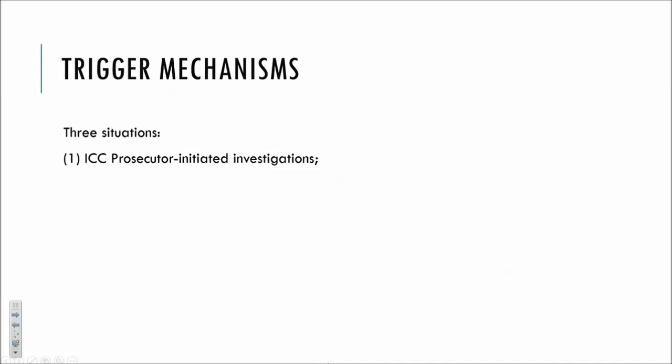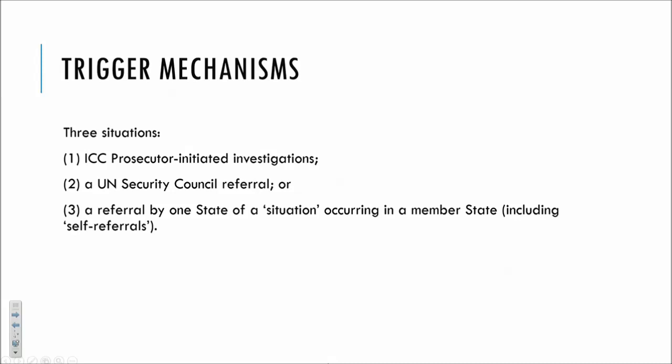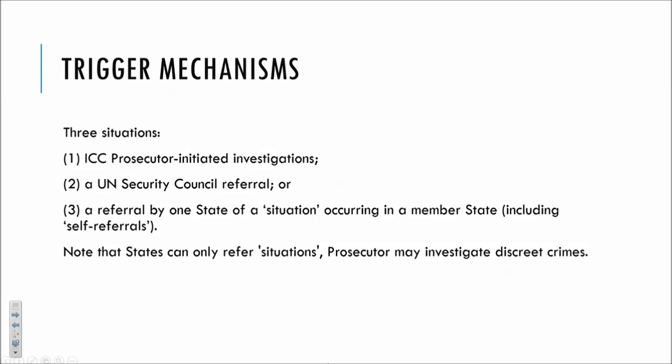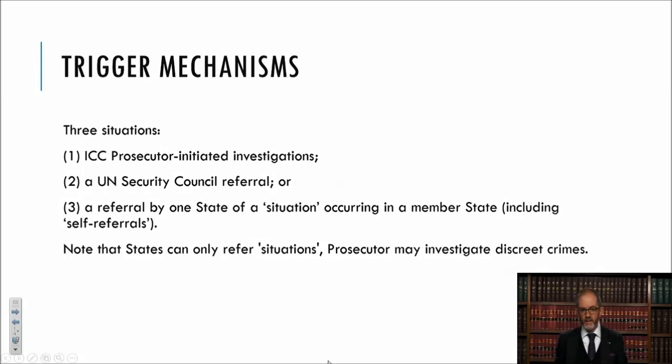In summary, the three situations are: the ICC prosecutor him or herself can initiate an investigation; there can be a UN Security Council referral; or there can be a referral by a state of a situation occurring in a member state. As drafted, that last mechanism appears to contemplate one member state saying to the prosecutor that crimes have occurred in another member state and requesting investigation. But in practice, so-called self-referrals have been common — states have said to the court that they would like it to investigate a situation occurring within their own territory. One important point: states can only refer situations, not specify that only a particular rebel insurgent group should be investigated. They refer a particular situation, and the prosecutor will then identify the crimes to be further investigated.